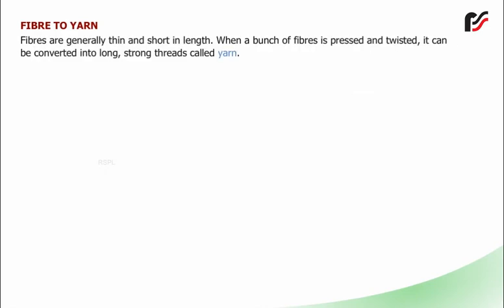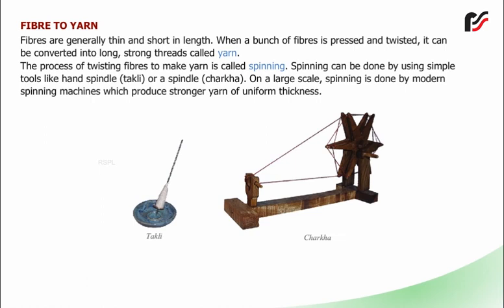Fiber to yarn: Fibers are generally thin and short in length. When a bunch of fibers is pressed and twisted, it can be converted into long, strong threads called yarn. The process of twisting fibers to make yarn is called spinning. Spinning can be done by using simple tools like a hand spindle. On a large scale, spinning is done by modern spinning machines which produce stronger yarn of uniform thickness.